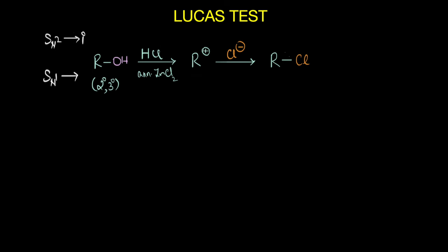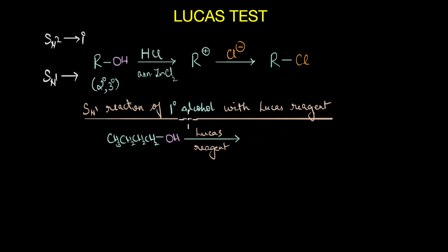Now this is obvious because SN1 reaction of a primary alcohol with Lucas reagent will not take place at all because the reaction proceeds via a carbocation intermediate and when we have a primary alcohol the SN1 reaction would have to proceed via a primary carbocation intermediate and we know that primary carbocations are extremely unstable. So this is why SN1 reaction of primary alcohol with Lucas reagent does not take place.